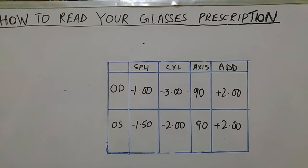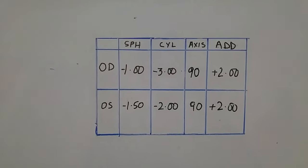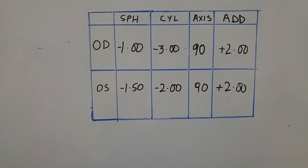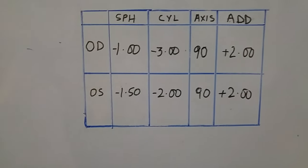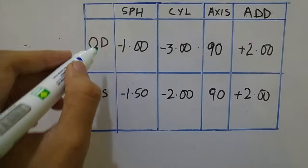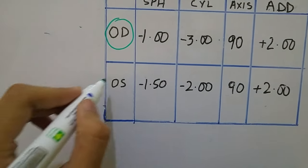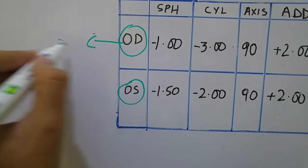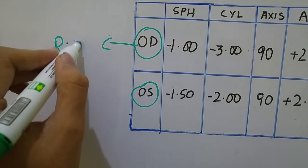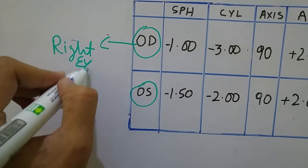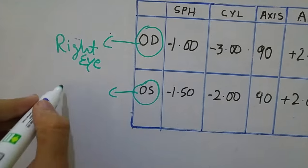Today I will tell you how to read your glasses prescription. This is how your prescription card looks like. First thing to consider here is the two words OD and OS. OD means your right eye and OS means your left eye.